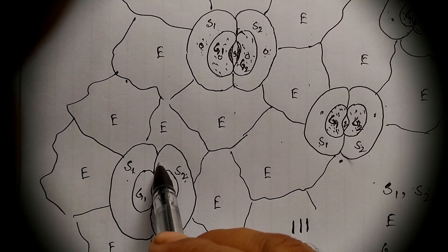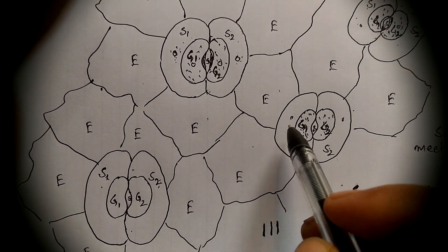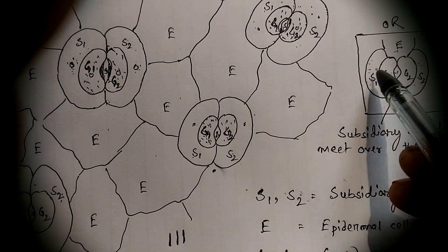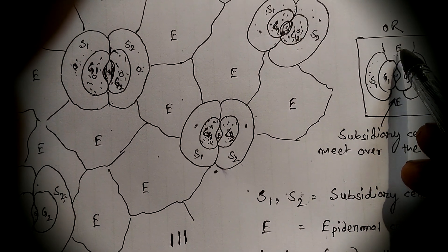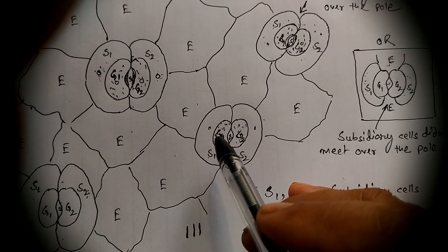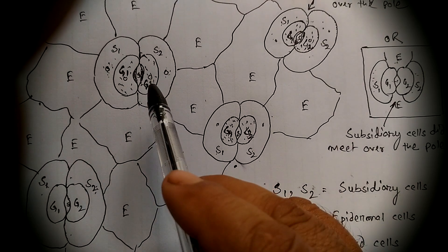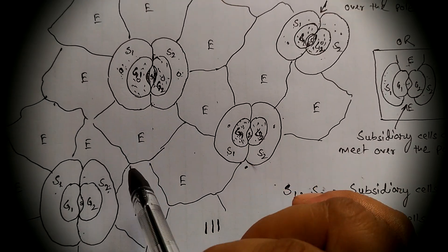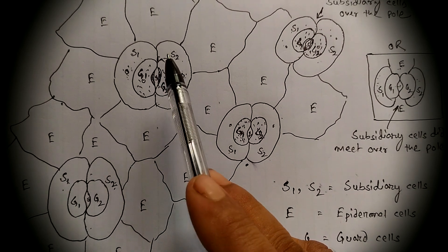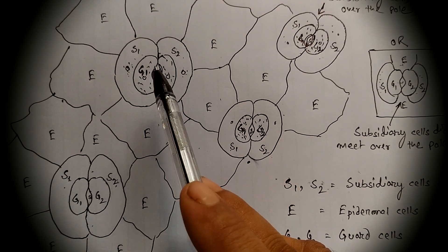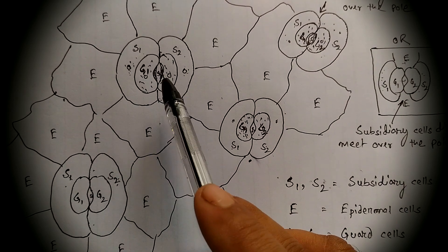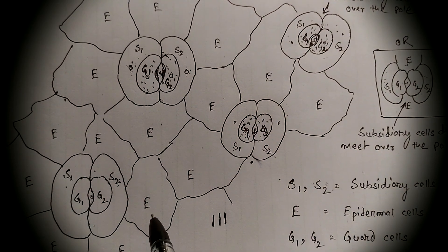Here also, they meet over the pole of the stomata. But in this case, they did not meet — here it is an epidermal cell. So we may say that in this type of stomata, the subsidiary cells may or may not meet over the stomatal pole.